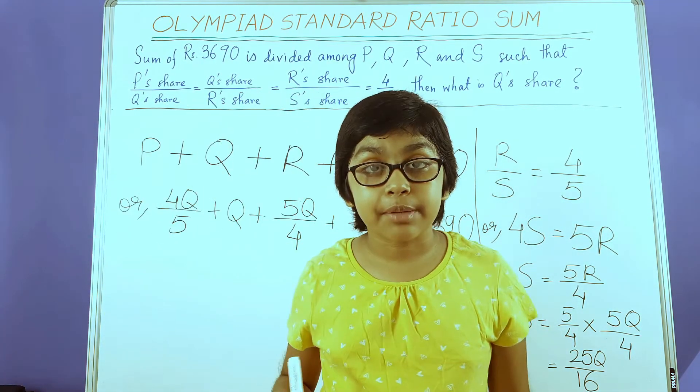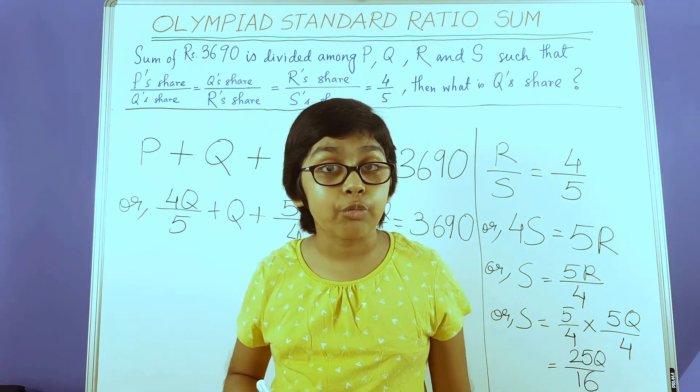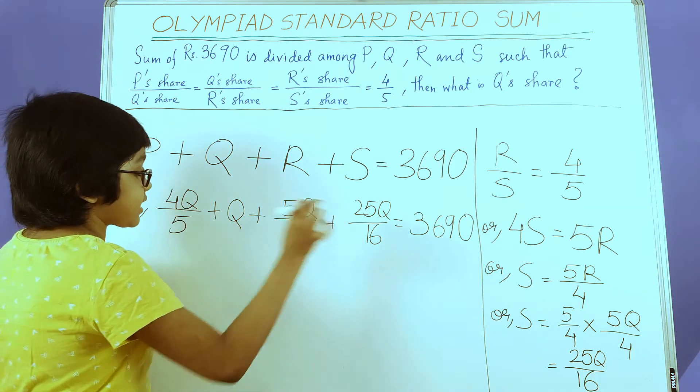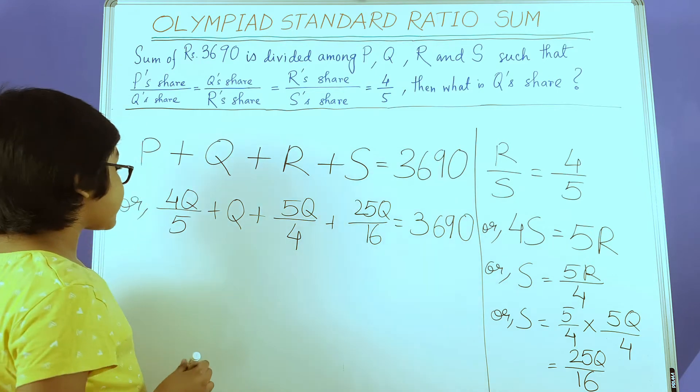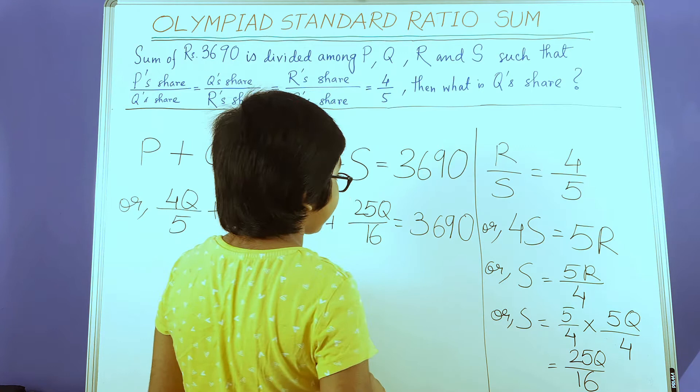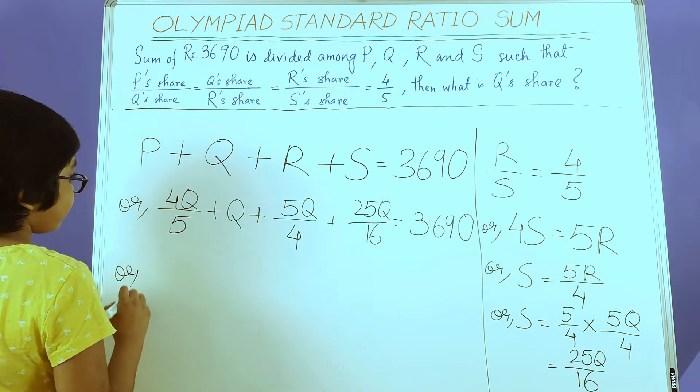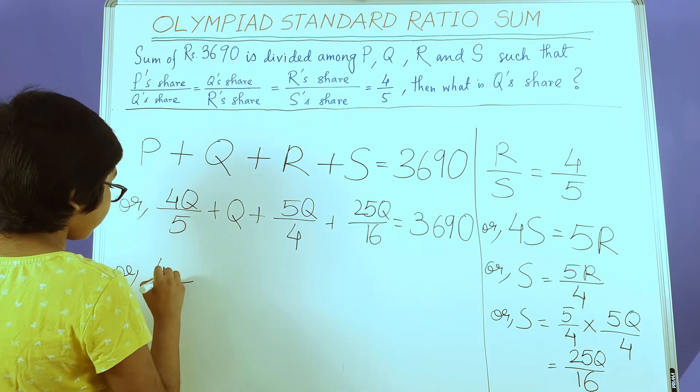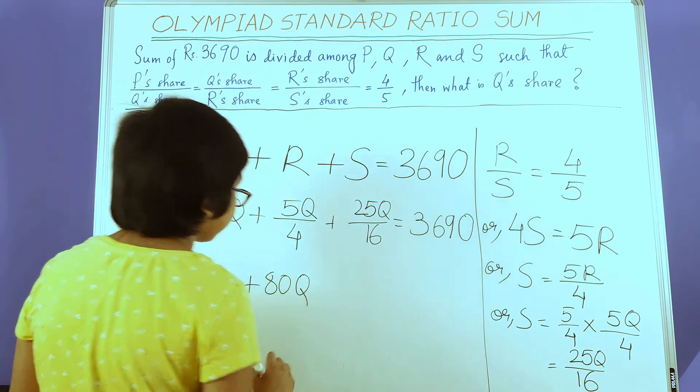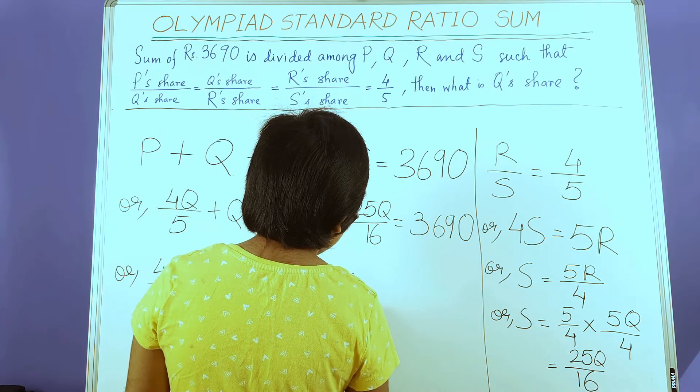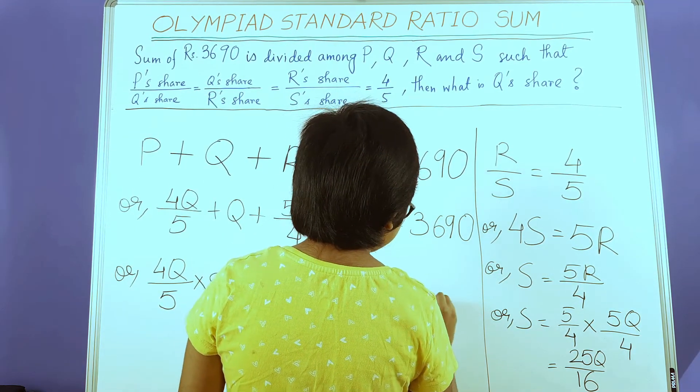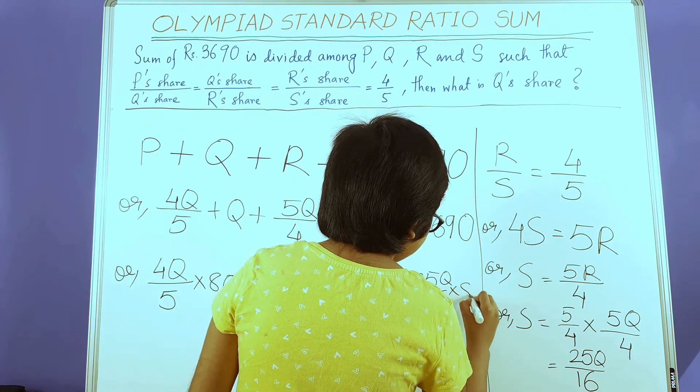Now we need to do a trick here. To work with these fractions, we need to multiply each term with the LCM of the denominators. Here we have 5, 4, and 16. The LCM is 80. And whatever we multiply here with all of them has to be multiplied on this side too. We should not forget this. Now let's multiply each of the terms by 80.